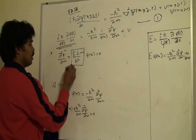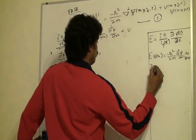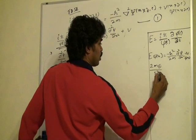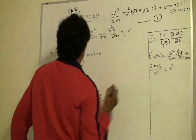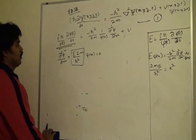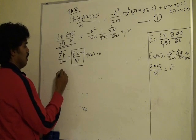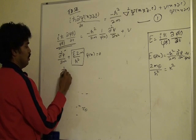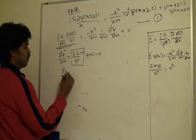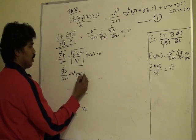So this can be written in terms of the wave number k. So that is 2mE by h bar square is equal to k square. So if you do that, then this equation becomes d²ψ/dx² plus k² ψ(x) equal to 0.